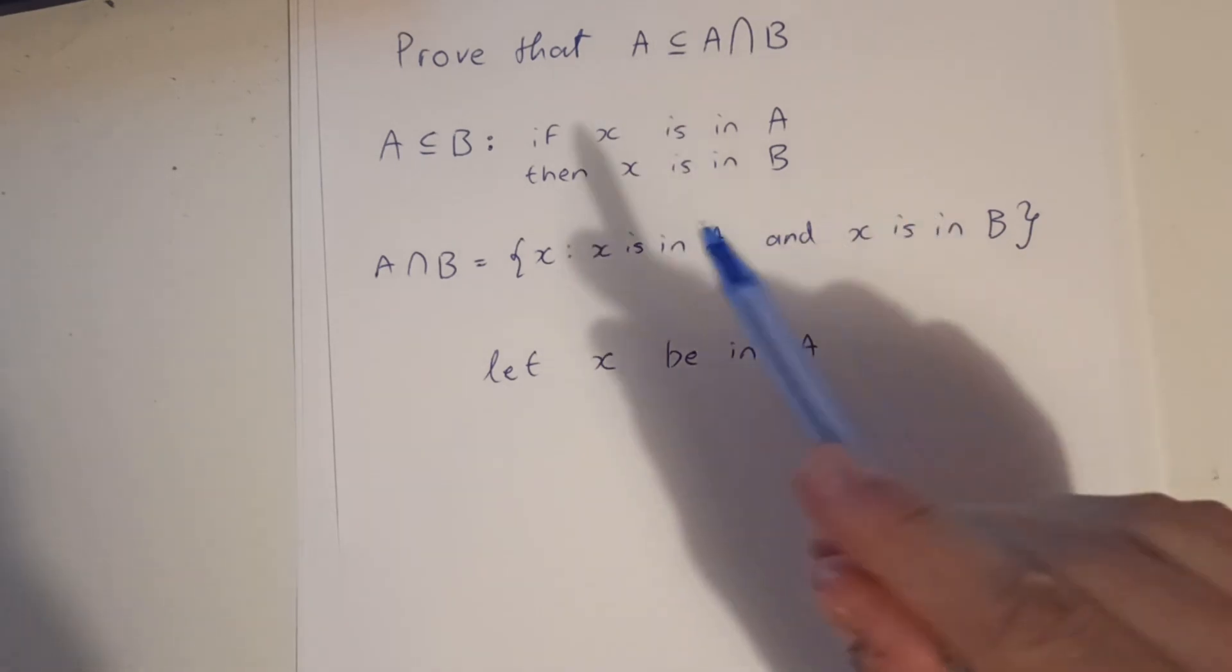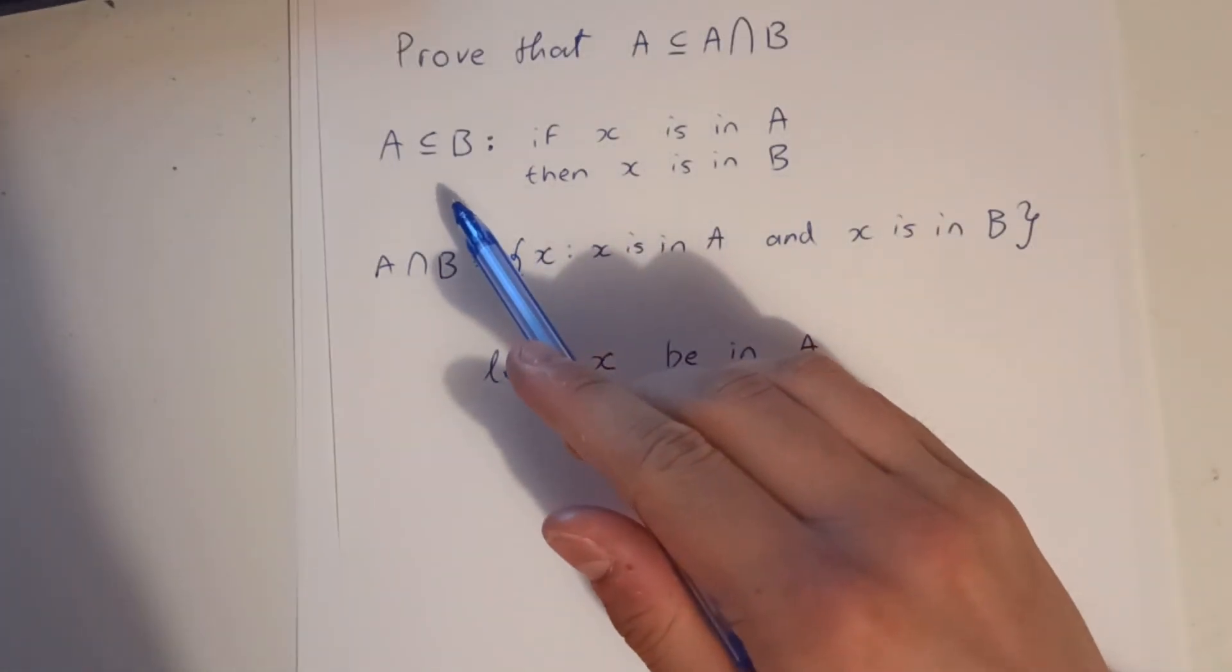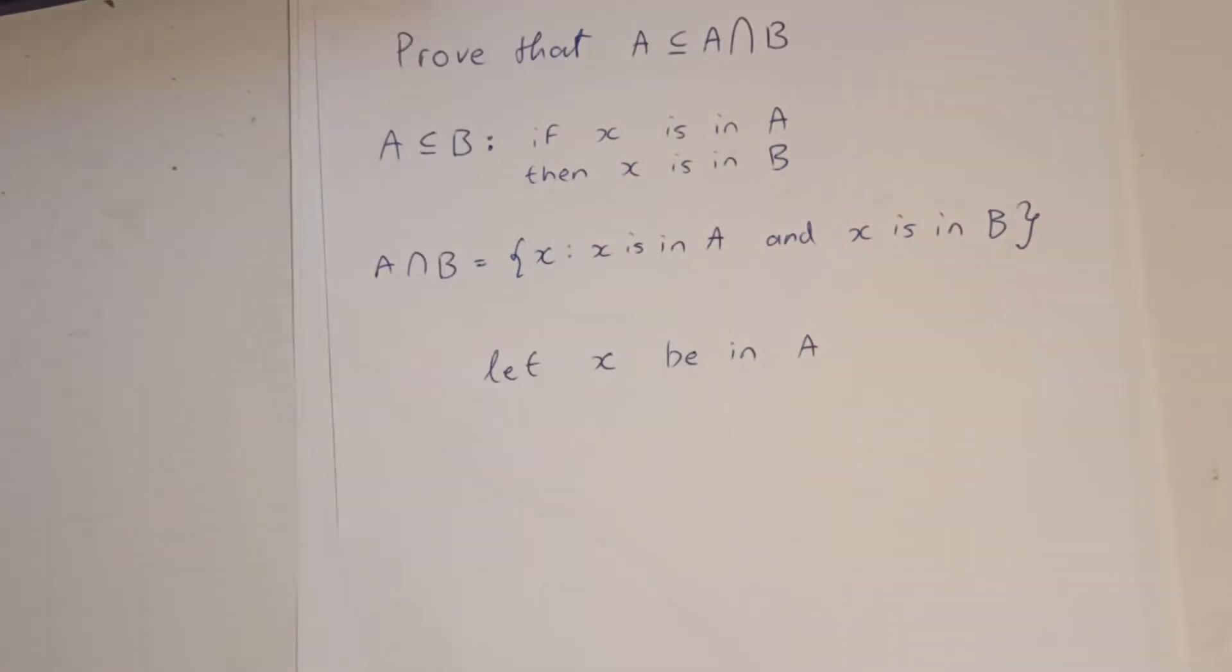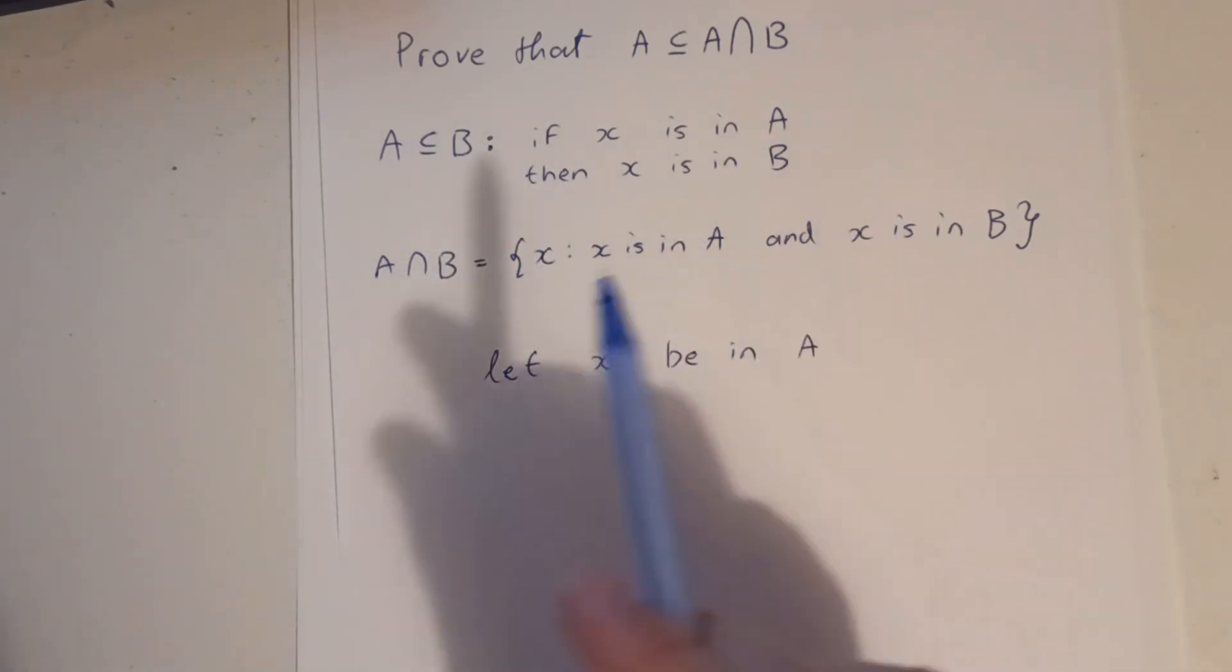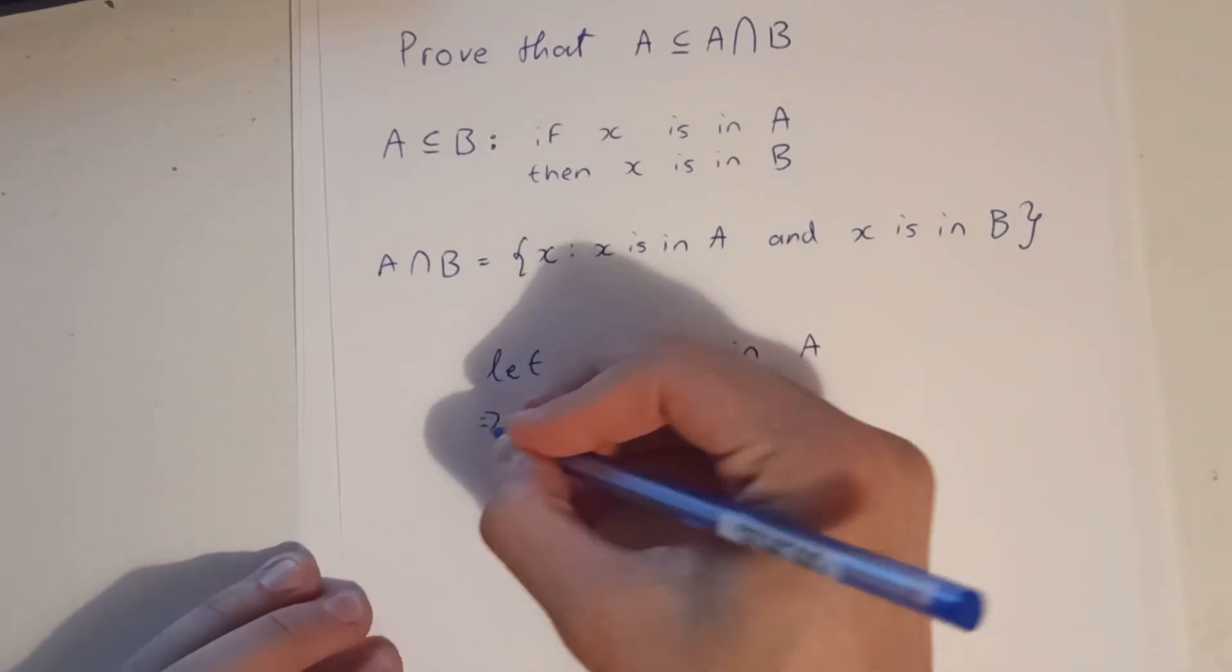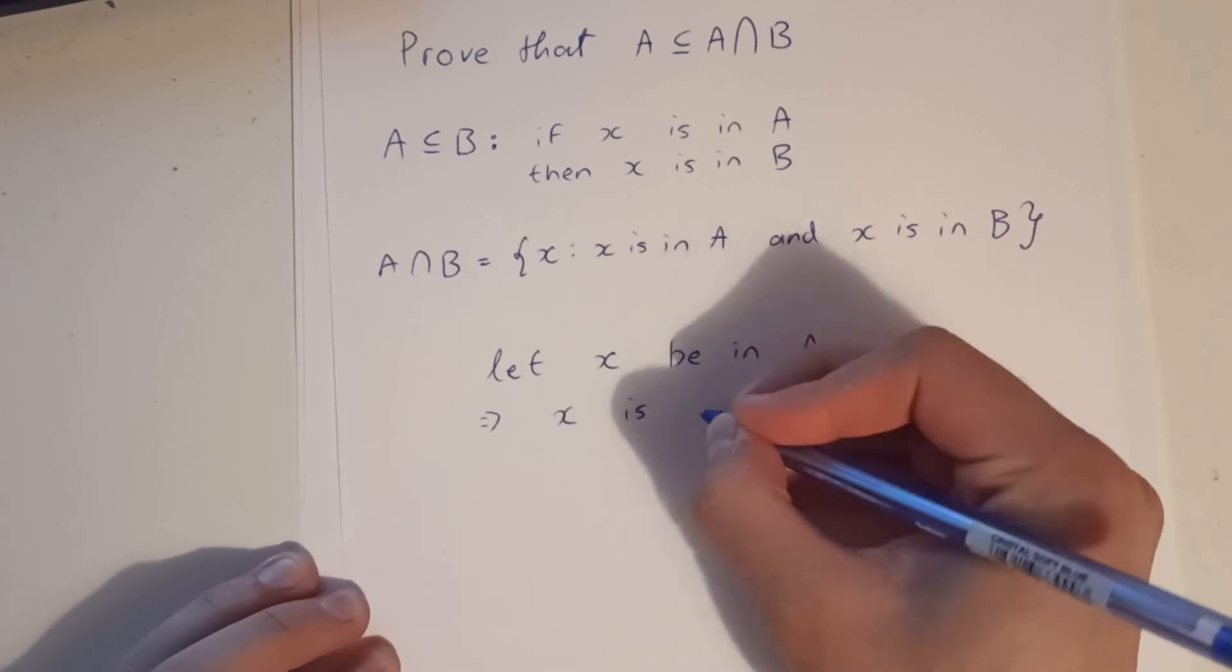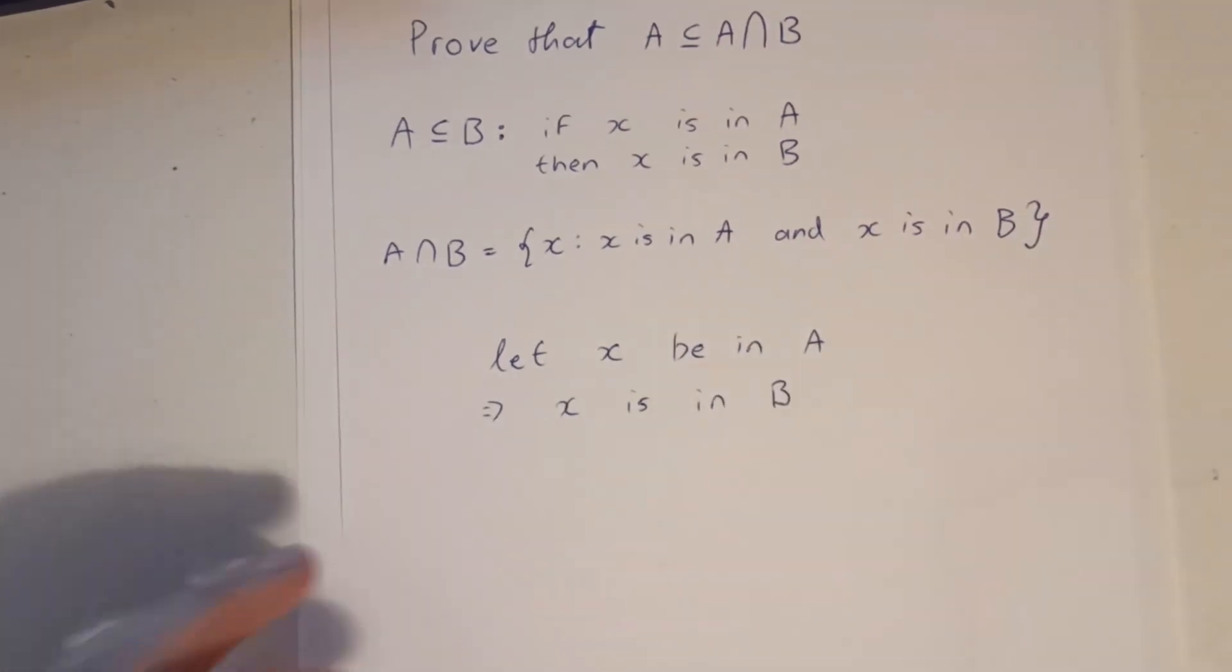Well, we know that A is a subset of B, and because A is a subset of B, that means that if X is in A, then X is in B. So we can say that X is in B, by our definition.